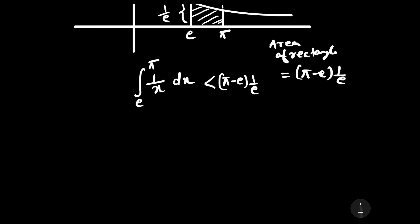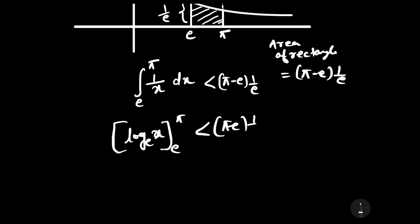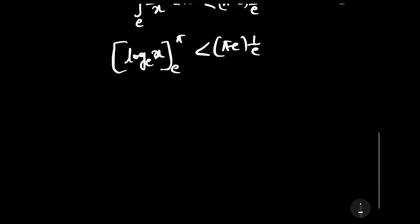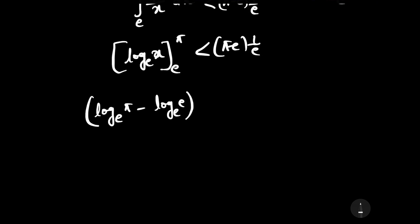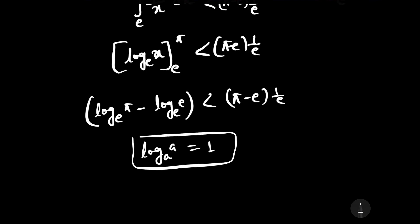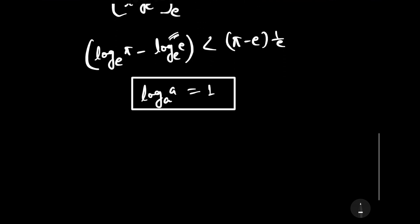We can find the area of the shaded region by integrating: the integral of 1/x dx is log base e of x evaluated from e to pi, which is less than (pi − e) × (1/e). Putting in the limits gives log_e(pi) − log_e(e), which is less than (pi − e) × (1/e). Since log_e(e) = 1, we can write log_e(pi) − 1 < (pi − e) × (1/e).